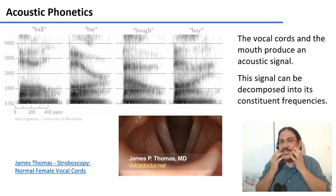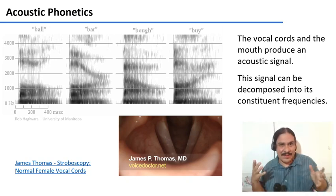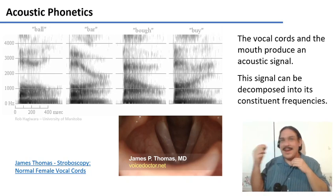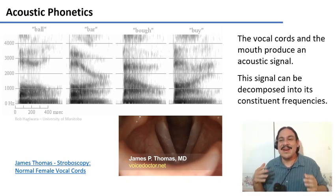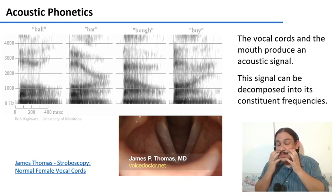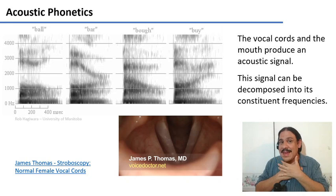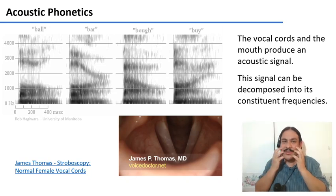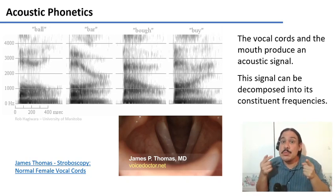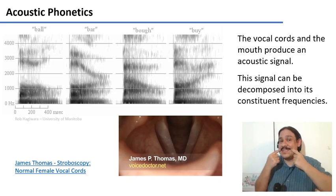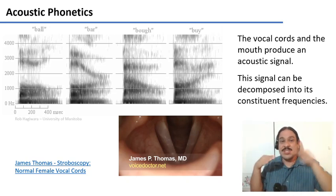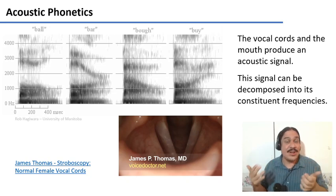Then the air enters your mouth, and your mouth acts like a cave. Have you ever been in a cave and shouted and heard an echo? So your mouth changes the frequency of the air rushing out of your throat. The geometry of your mouth changes depending on the sound you're producing — your tongue is going to be in a certain position, your lips are going to be in a certain position — and that's going to create a combination of frequencies, just like when you play a guitar or a violin.